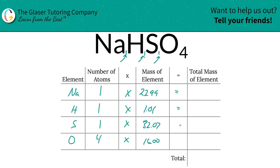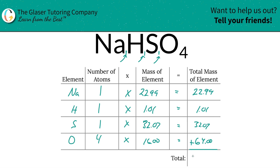Then we're going to find the total mass of each element in the compound by simply multiplying across the row. So for sodium, the total mass of sodium in the compound is going to be 22.99, hydrogen is going to be 1.01, sulfur is going to be 32.07, and oxygen will be 64. Now to find the total mass of the entire compound, all you've got to do is add up all these total masses of each individual element, and it's 120.07. That's the first step — we have now found the total mass.